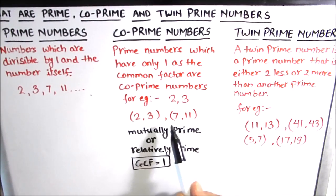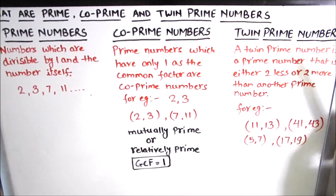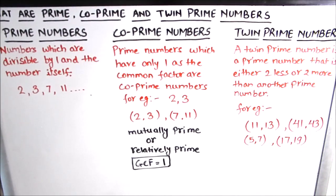Twin prime numbers are prime numbers that are either 2 less or 2 more than another prime number — numbers with a prime gap of 2. Examples are 11 and 13, 41 and 43, and 5 and 7. These are all twin prime numbers.